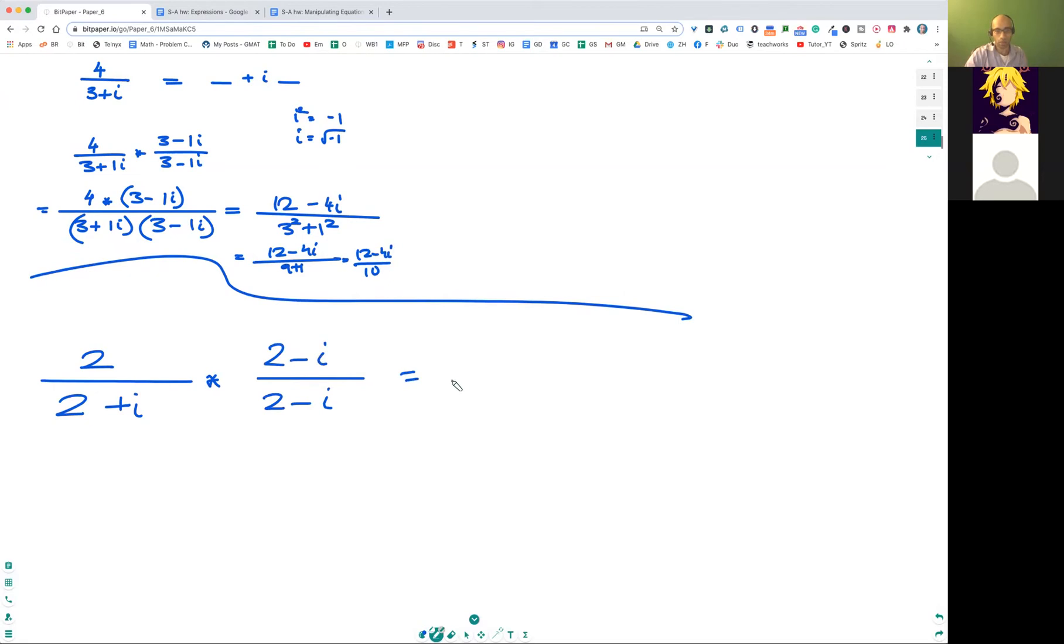And what do you do next here? Look at it over here. What's going on? (2+i) times (2-i). And here you're going to get 2 times (2-i). So see what you can do with this.